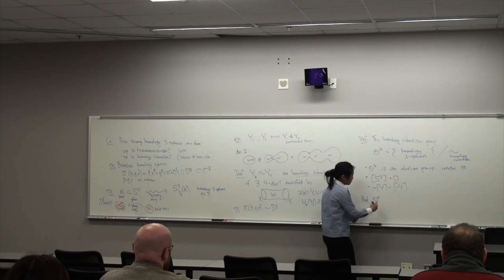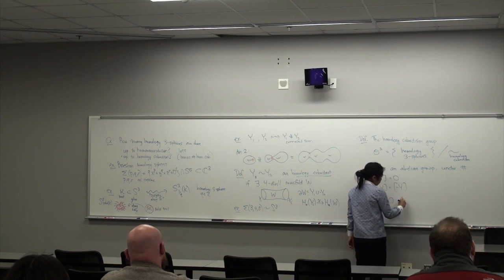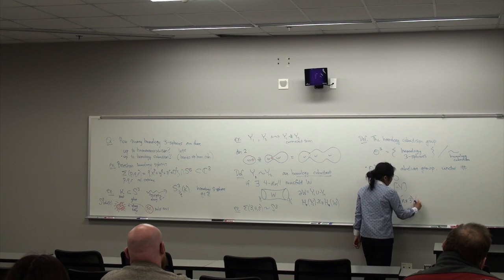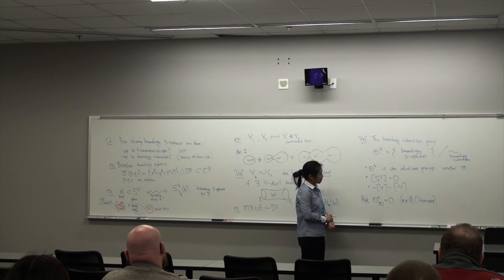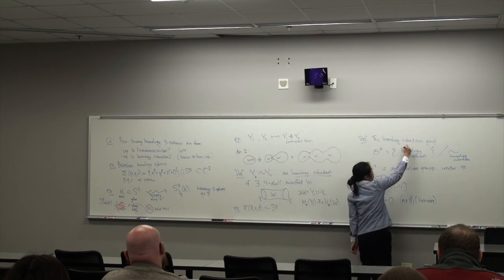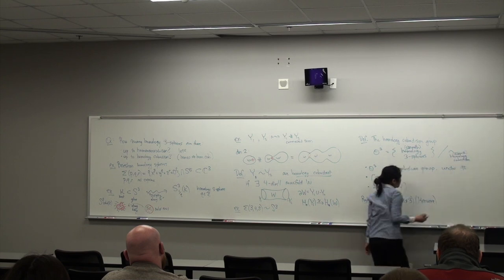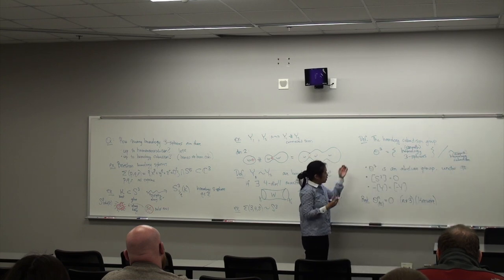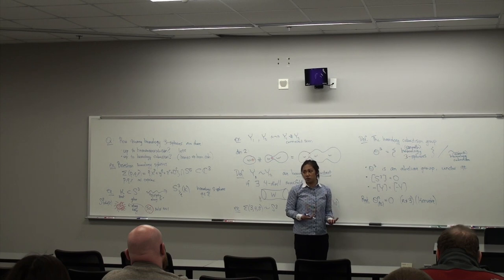One can define a generalized version: θ^n is the group of homology n-spheres modulo (n+1)-dimensional homology cobordism. Interestingly, in the PL category of piecewise linear homology spheres, this group is trivial for all n not equal to three — this is due to Perber. For us, θ³_PL equals θ³_smooth, meaning we can work with smooth homology three-spheres and smooth homology four-manifolds. So θ³ is measuring something very special about three- and four-dimensional topology.